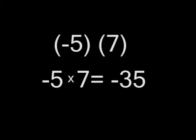Finally, the last group, negative 5 and 7. This is simple multiplication. Negative 5 and 7 will give you negative 35.